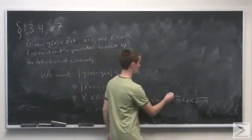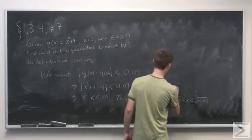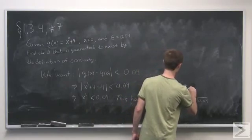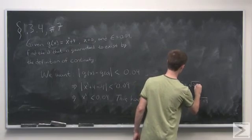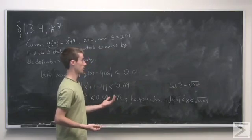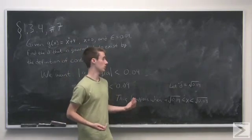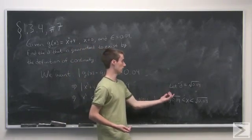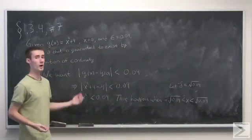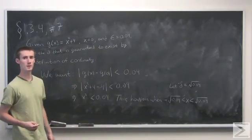Well, this just says let's let delta equal the square root of 0.04. So now we know that if the distance from 0 to x is less than delta, or within this interval here, then the distance between our output values will be less than epsilon.